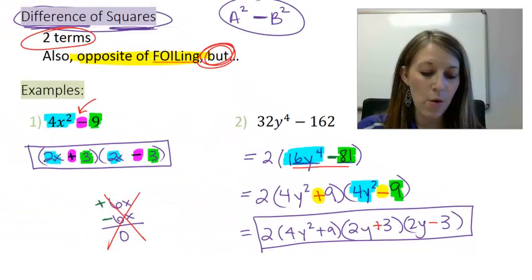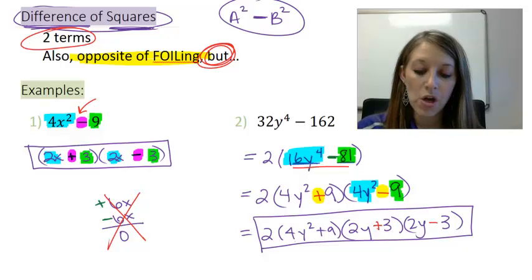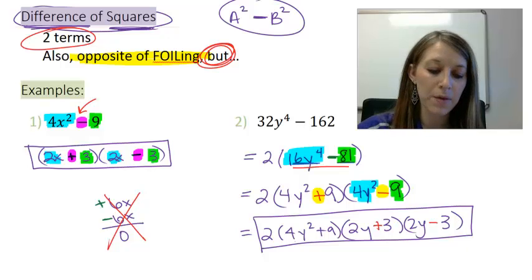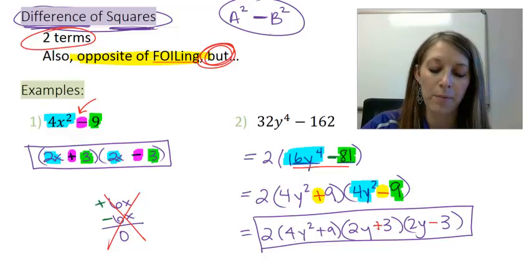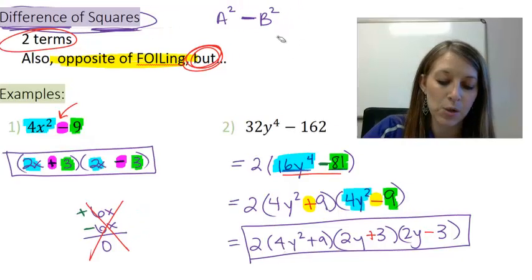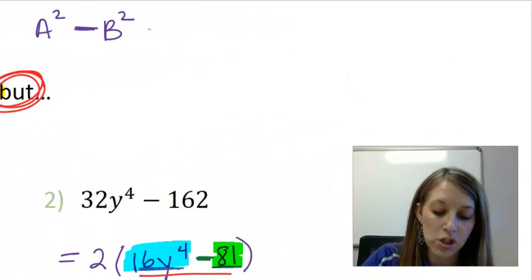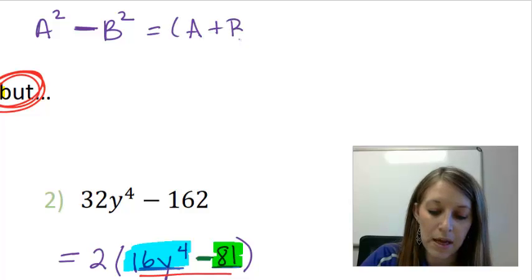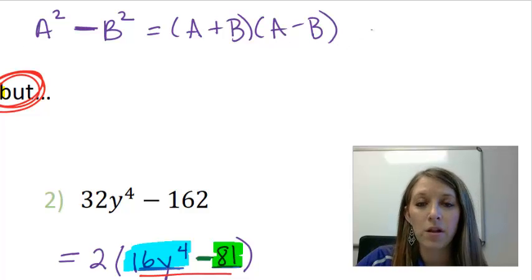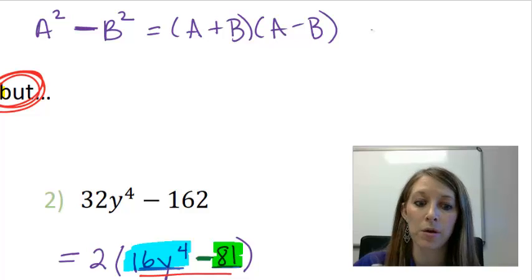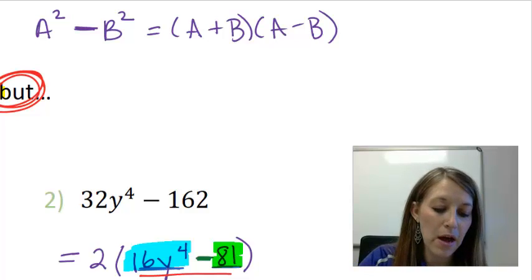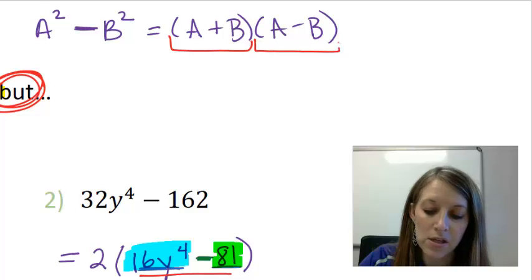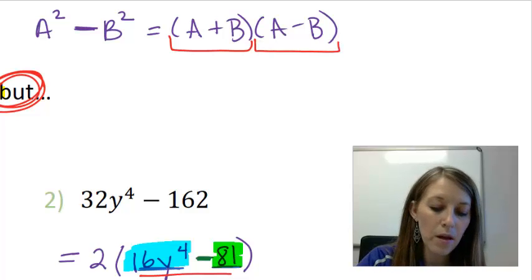Now the other thing that I want to talk about with difference of squares is notice that we always end up with the same type of parentheses here. If I go back to my just formula up here, a squared minus b squared, I know that that will always just factor as a plus b times a minus b. So you can just memorize the formula or you can use the same process that we did with trinomials. But the thing that I want to point out here is notice that your parentheses are almost exactly the same, with the exception that your signs are different.